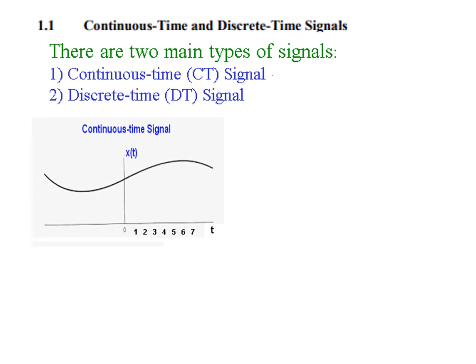Now what is continuous time? The time axis is continuous, meaning there is no break. Since the time axis is continuous, the signal can be viewed at any point in time — at 0.001, 0.002, every point there is a signal. This type of signal is called a continuous time signal and it is represented by x(t), where T stands for continuous time.